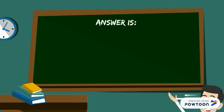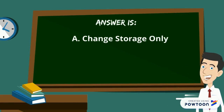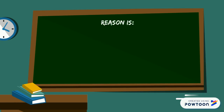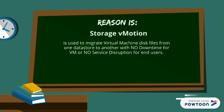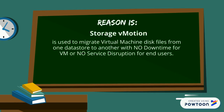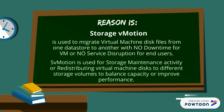The answer is change storage only. The reason is storage vMotion is used to migrate virtual machine disk files from one data store to another with no downtime for the VM or no service disruption for end users. Storage vMotion is also used for storage maintenance activity or redistributing virtual machine disks to different storage volumes to balance capacity or improve performance.